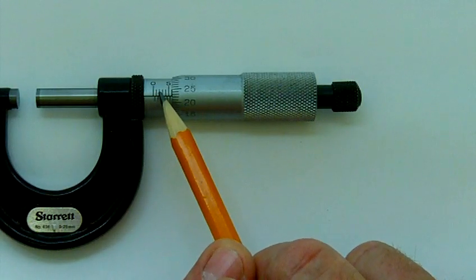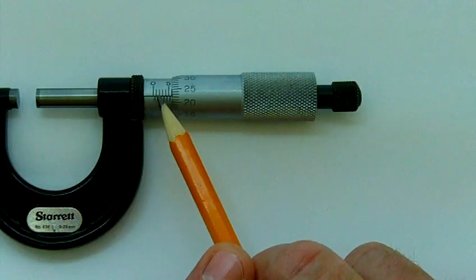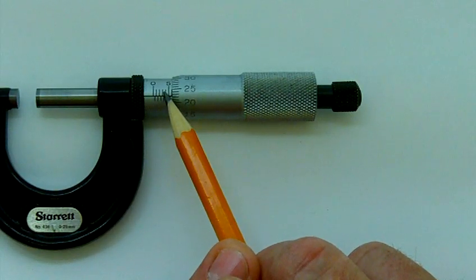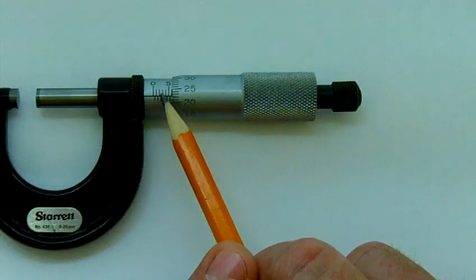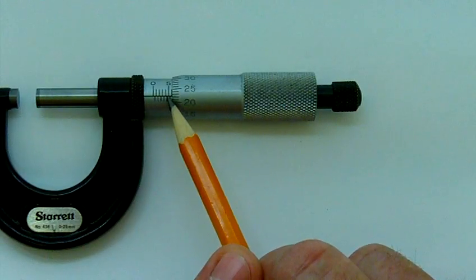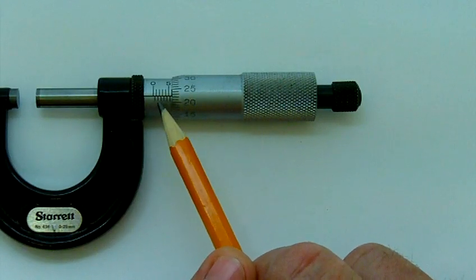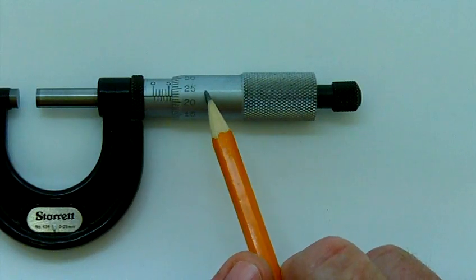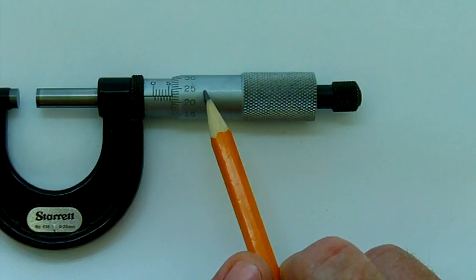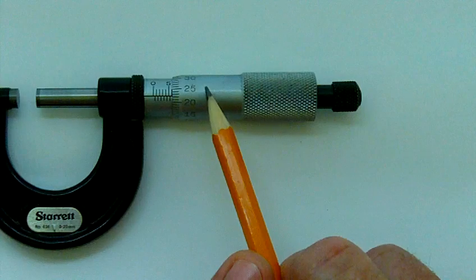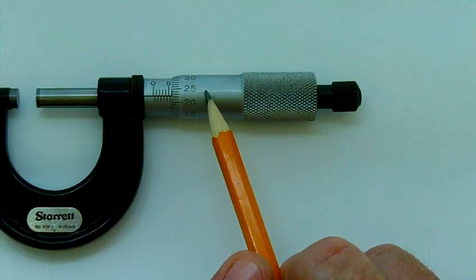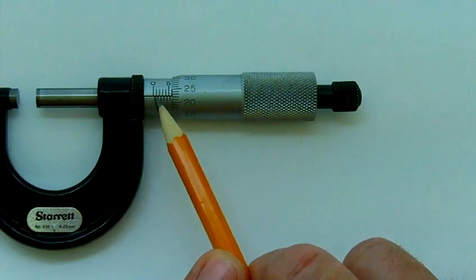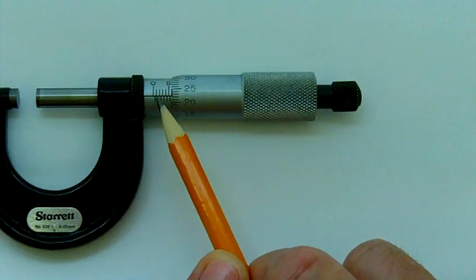Do you notice there are five graduations above the datum line? Each graduation is one millimeter. Do you notice how there's five short graduations below the datum line? Each one of these is a half a millimeter. So every revolution of the thimble will move it a half a millimeter. The screw on this is 0.5 millimeters pitch. So every time we do one complete revolution of the thimble, it will move the micrometer a half a millimeter.